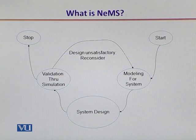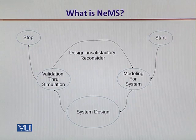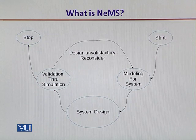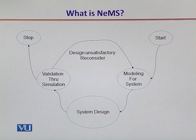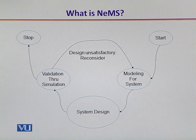In this figure, we can see that when a system is to be realized as a simulation model, first of all, it is the modeling for the system that defines and describes the design details. Once it is designed, the system is processed through a validation activity done as simulation. If there is an anomaly, it is considered to be an unsatisfactory design aspect and it must be reconsidered.